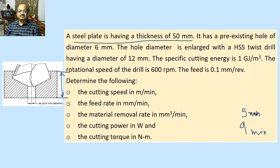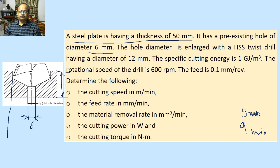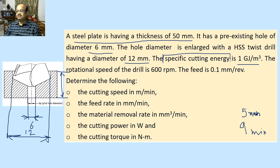It has a pre-existing hole, as you can see here. The diameter of the hole is 6 millimeters — this pre-existing hole, quite often called a pilot hole, is 6 millimeters. The hole diameter is being enlarged to 12 millimeters. While doing that, it has been observed that specific cutting energy is 1 gigajoule per meter cube.